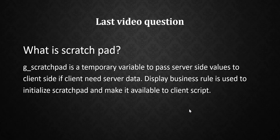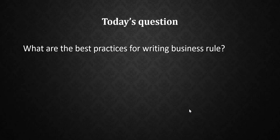From the last video: what is g_scratchpad? g_scratchpad is a temporary variable used to pass server-side values to the client side. A Display Business Rule is used to initialize the scratchpad and make it available to client scripts. Today's question is: what are the best practices for writing a business rule? Please write your answer in the comments, and I will give the answer in the next video.